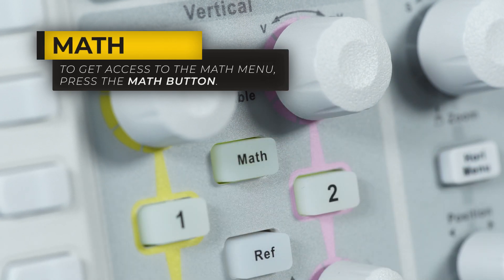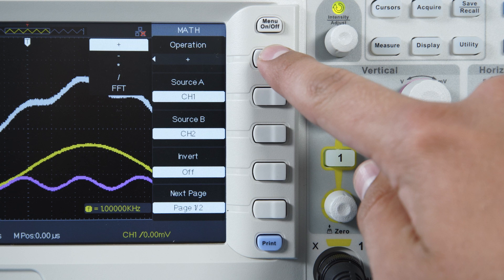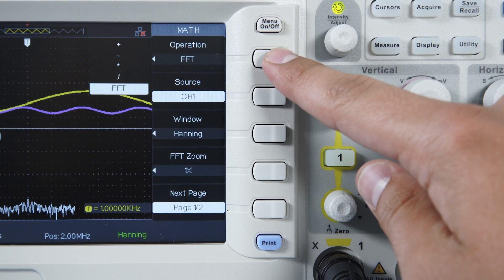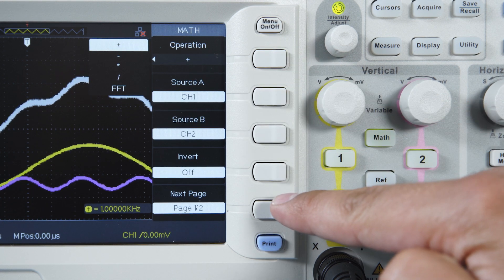By pressing the Math button, you get access to the Math menu. The oscilloscope can perform 5 different operations, including addition, subtraction, multiplication, division, and fast Fourier transform.